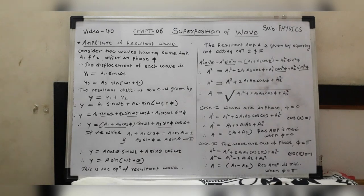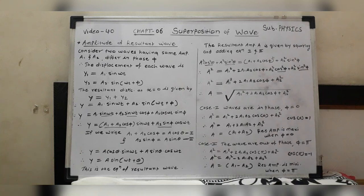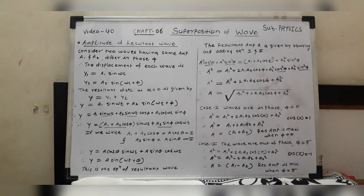In this lecture, we have to see first what is the principle of superposition of two waves. The statement is: when two or more waves arrive at a point simultaneously traveling through the medium, then each wave produces its own displacement, independent of each other, and their resultant displacement at that point is equal to the vector sum of the displacements due to the individual waves at that point.